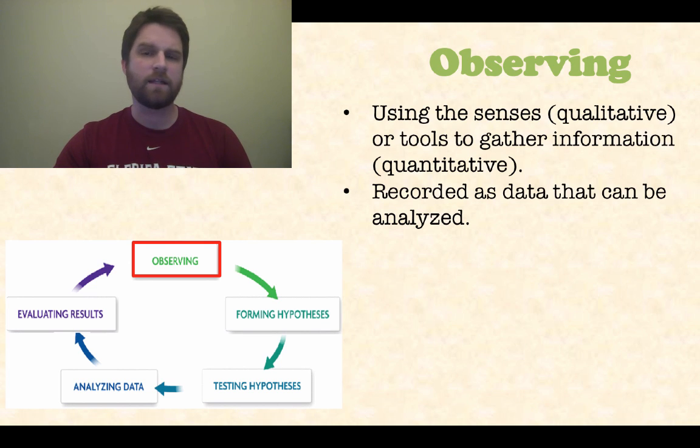Observing is the first step in scientific process. You're going to use your senses, which is your qualitative data, and you're going to use tools to gather information, which is your quantitative. Now the difference between qualitative and quantitative: qualitative is things like what color something is or something you can see or that you can touch. Quantitative is anything that has to do with numbers, so how long something is in centimeters or how much something weighs in grams.